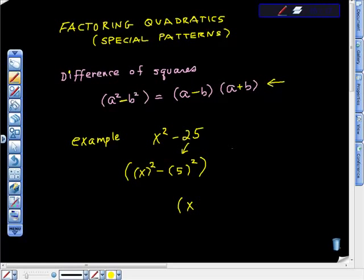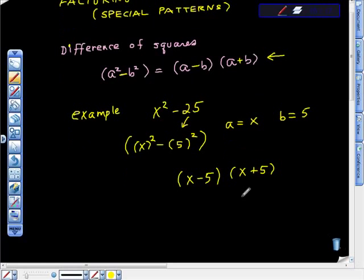You say okay well a is equal to x and b is equal to 5 and all I'm going to do is fill in the blanks up here. So it's (x minus 5) times (x plus 5). I'm going to prove it really quickly to you through FOIL. x times x is x squared.